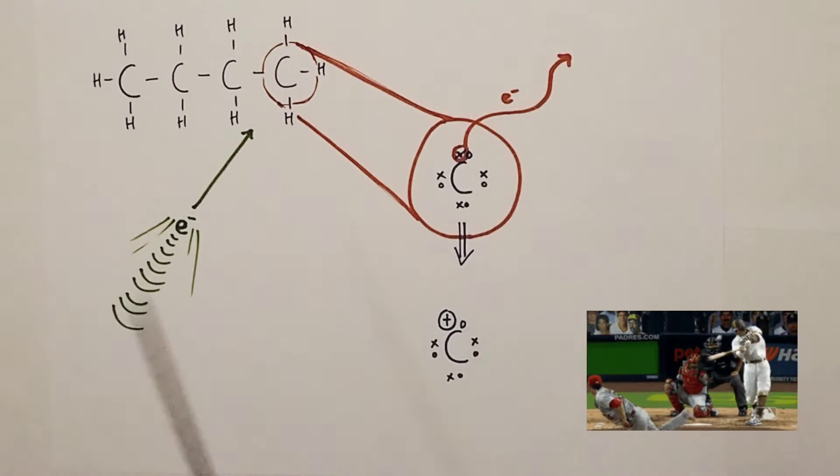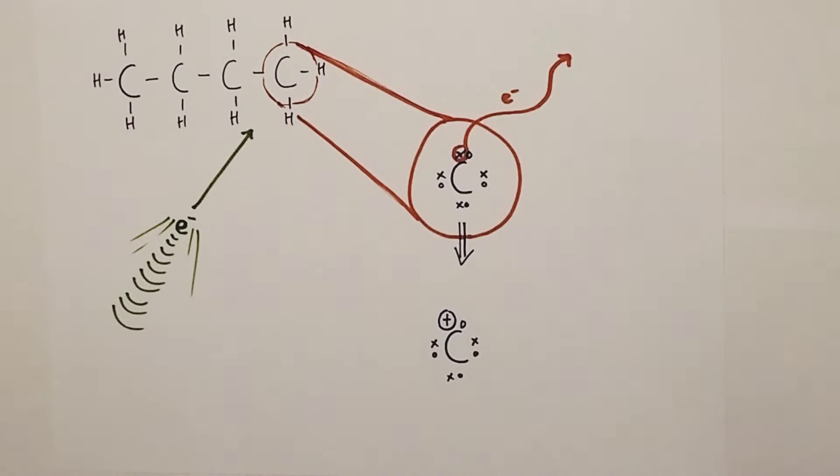It basically knocks off an electron from a carbon atom on this butane molecule. Now that will leave that carbon atom with a single unpaired electron and an overall positive charge because it has lost a one negative electron.